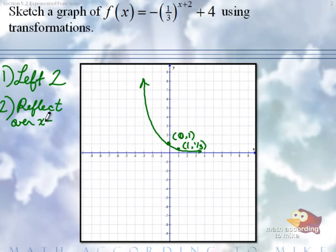Remember, if you negate the variable, you flip over the y. If you negate the function, you flip over the x. And minus two. Up four.